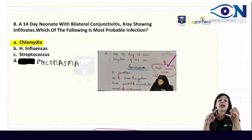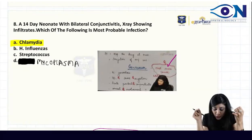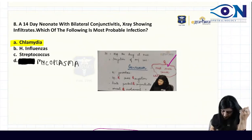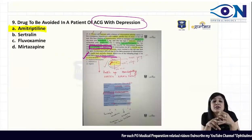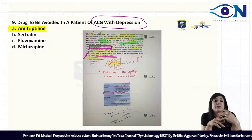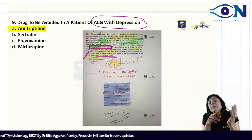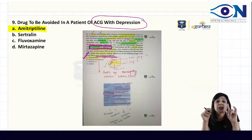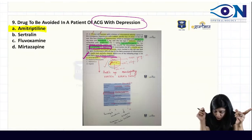I have made you write ophthalmia neonatorum — a neonate with bilateral conjunctivitis. The drug to be avoided in a patient of acute congestive glaucoma with depression — you know amitriptyline. Amitriptyline is an antidepressant that can precipitate the attack of acute congestive glaucoma. We have already written acute red eye and acute anterior uveitis with acute congestive glaucoma.